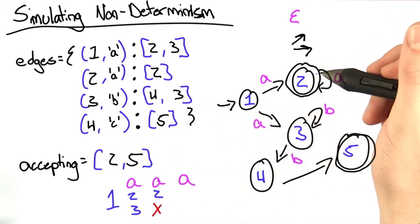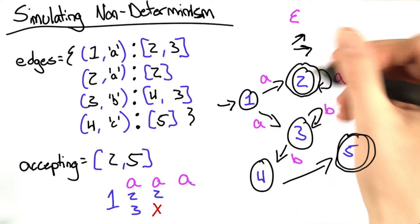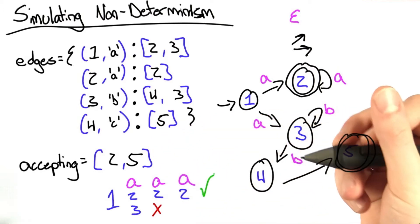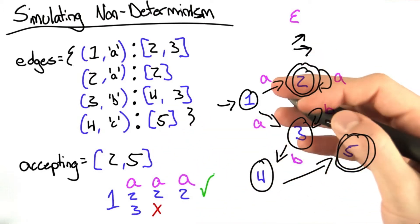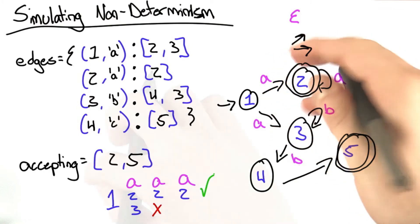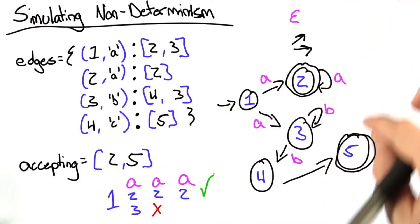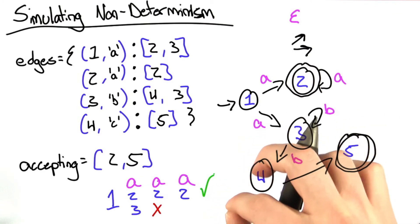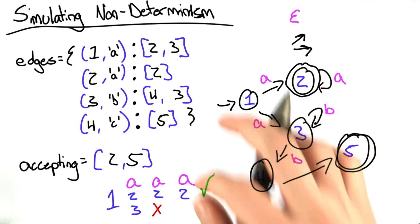However, we still have the other version of the simulation. We take the last A back to 2, and from here, we've succeeded. And by our definition of non-determinism, if any path through the state machine results in an accepting state, then we say this machine accepts that string.